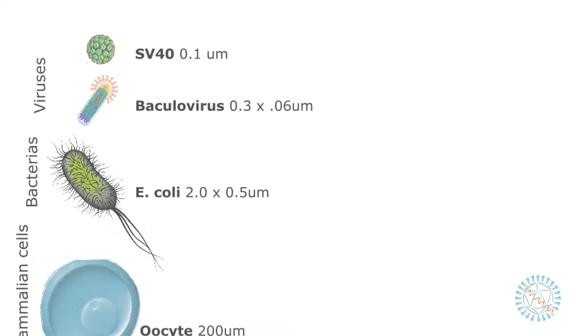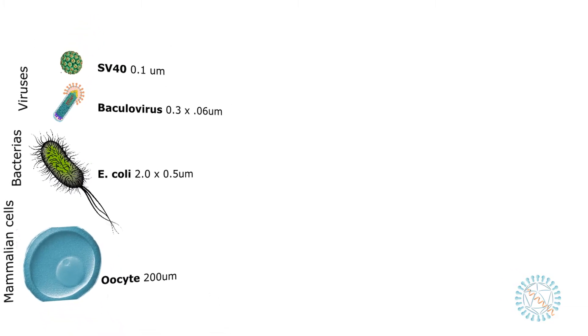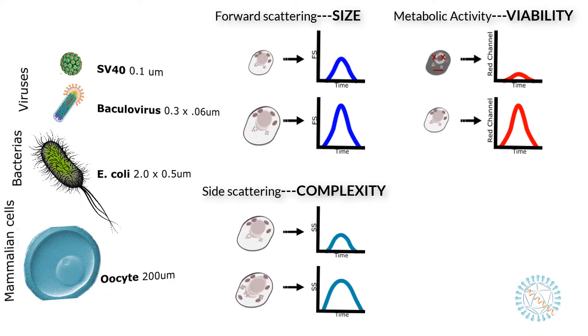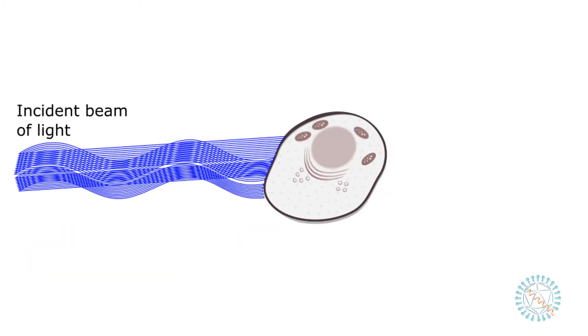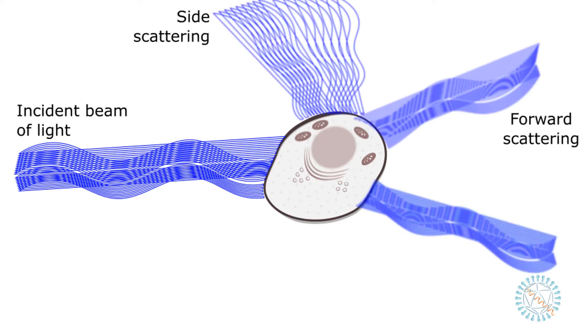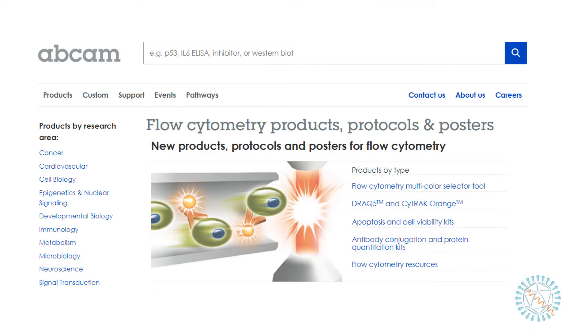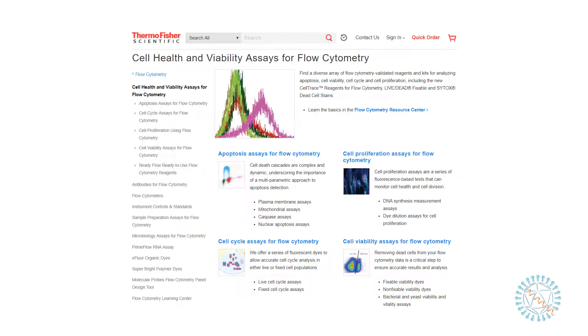Flow cytometers like the BD Accuri C6 system are suitable to analyze particles ranging from 100 nanometers up to 200 micrometers in diameter. Thus it is possible to use this to study large viruses, bacteria, as well as eukaryotic cells. For each of these types of particles we can measure different characteristics including size, internal complexity, viability, and the presence or absence of specific molecules in their interior or surface. All of this is possible thanks to the capacity of flow cytometers to closely monitor the phenomena arising from the interaction of suspended particles with an incident beam of light. There are several companies like Thermo Scientific or Abcam that offer researchers a vast selection of reagents to detect biological markers or monitor biological processes using flow cytometry. I will post the links to their website so you can check their catalogs.